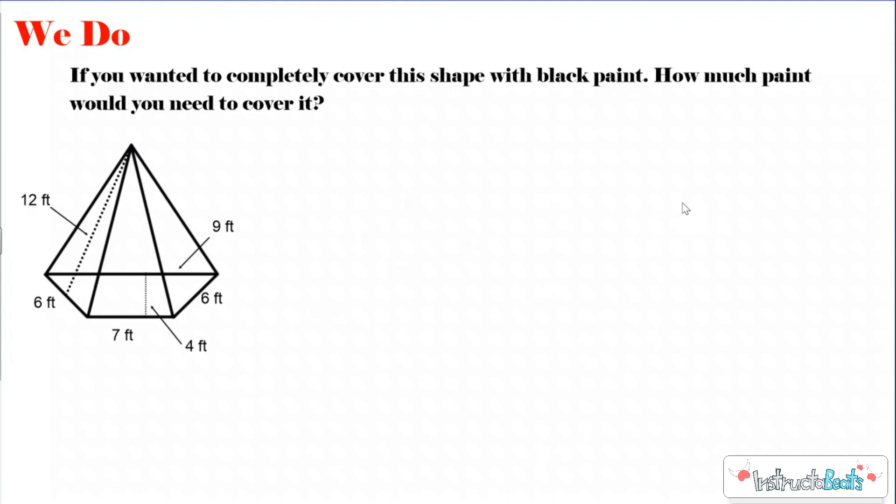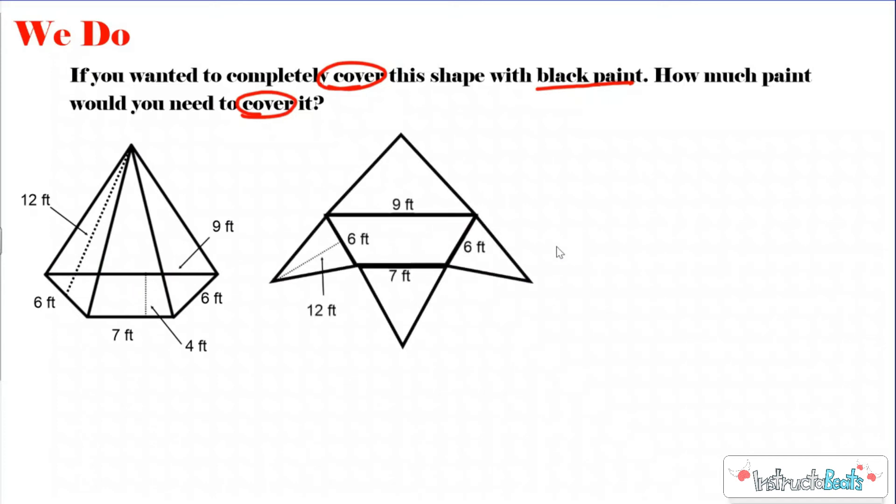Our We Do problem is a little bit different. It's saying if you wanted to completely cover the shape with black paint, how much paint would you need to cover it? We know that when we are covering something, especially with paint, wallpaper, different things like that, we're trying to find the area. How many square feet of paint will we need to cover this pyramid? This one's a little wonky because it has a trapezoid as a base. And then it has one, two, three, four lateral sides because it's going to have one connected to each side of my trapezoid. A lot of times they're going to use a net to kind of unfold this shape and give you a 2D representation of it. Here's what this net would look like. Just like our previous question, we need to find the surface area of the base and then all the lateral faces and add them together.